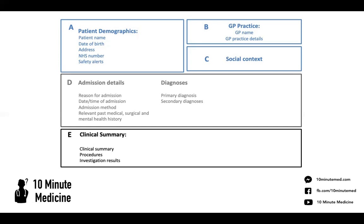Then there's a diagnosis section where you want to include their primary diagnosis — the main reason they've stayed in — and their secondary diagnosis. So if they've had a hospital-acquired pneumonia and you've treated it, you can include that here. You'd write 'hospital acquired pneumonia' and then put a dash and write 'treated'.